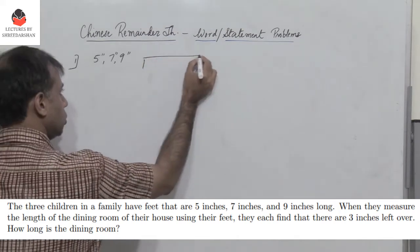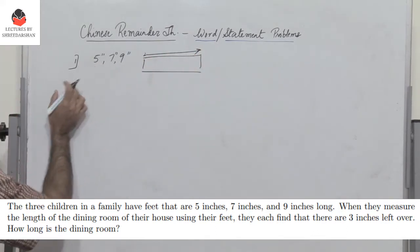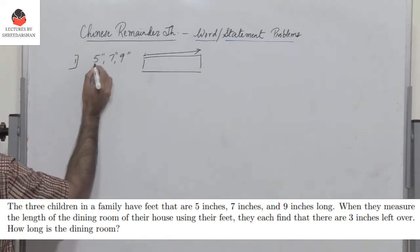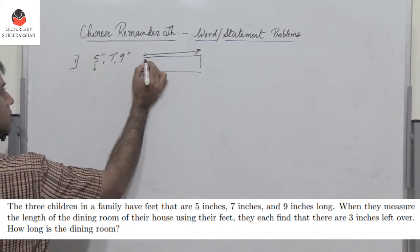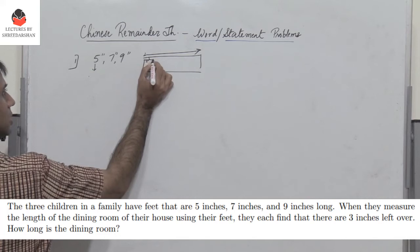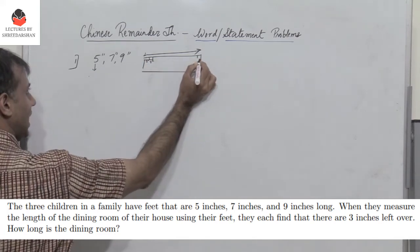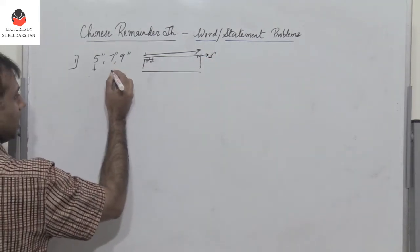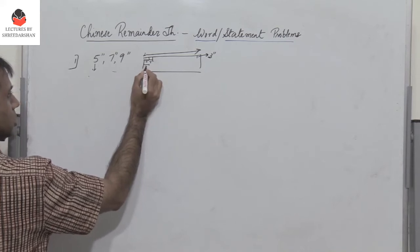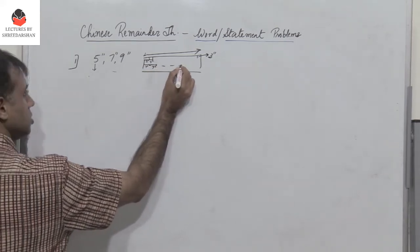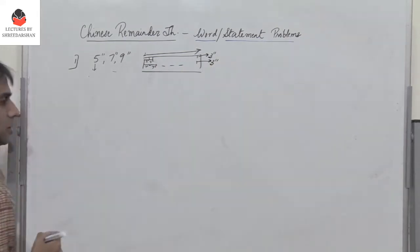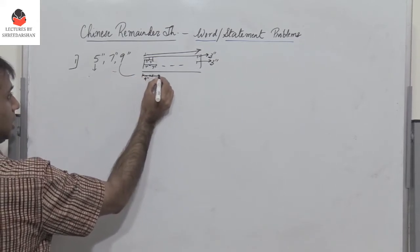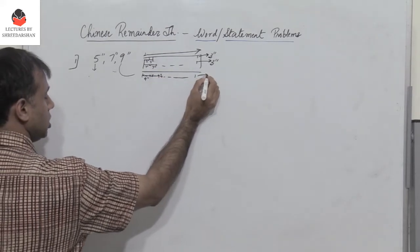The length of the dining room is measured by each child's foot. Child 1 has a foot of 5 inches — he measures 5 inches, then 5 inches again, and at the end 3 inches are left. The second child measures with his foot of 7 inches, repeating 7 inches, and again 3 inches are left. The third child has a foot of 9 inches, measures 9 and 9 again, and once more 3 inches remain.